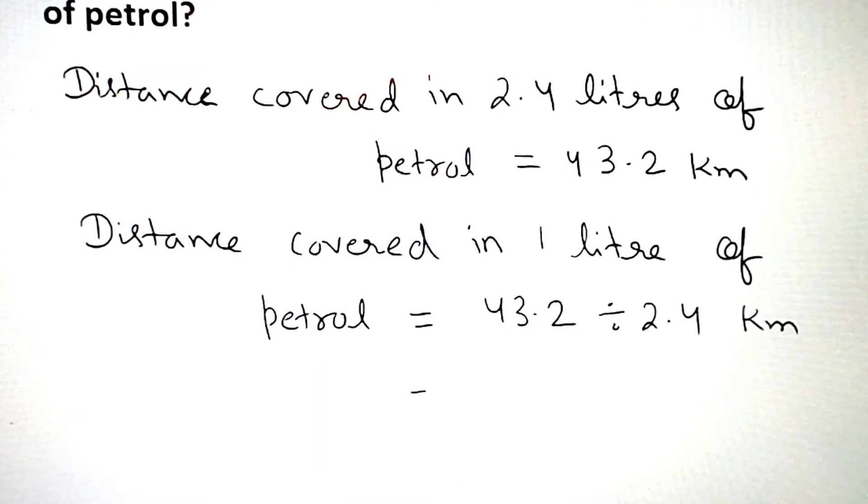Now we will solve this. It's 43.2. Now here we have to divide, so the point from the numerator goes to the denominator as one. When we divide, we multiply by the reciprocal of the number. So it becomes 1 by 2.4 kilometers.